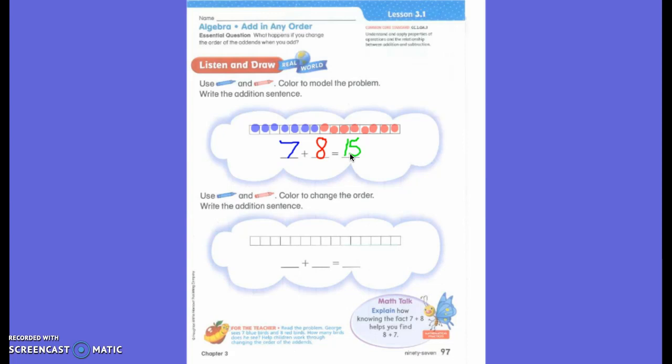Okay first grade. Remember yesterday we talked about the addends. This is an addend. This is an addend and this is an addend. Why is this not an addend? Because it has an equal sign. It's after the equal sign. What is it called? It's the sum. You are exactly right. So these two are my addends.